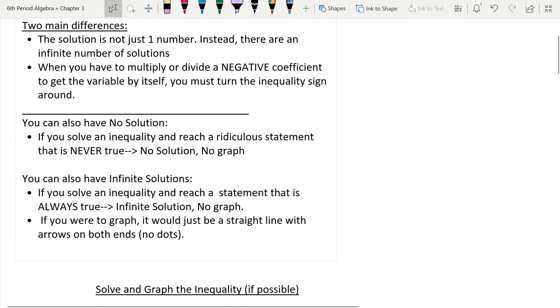We can also have an infinite solution. So, this is when we solve an inequality and we reach something that is always true. And so, when you reach something that's absolutely always positively true, it's called an infinite solution. And we don't graph infinite solutions anyway.